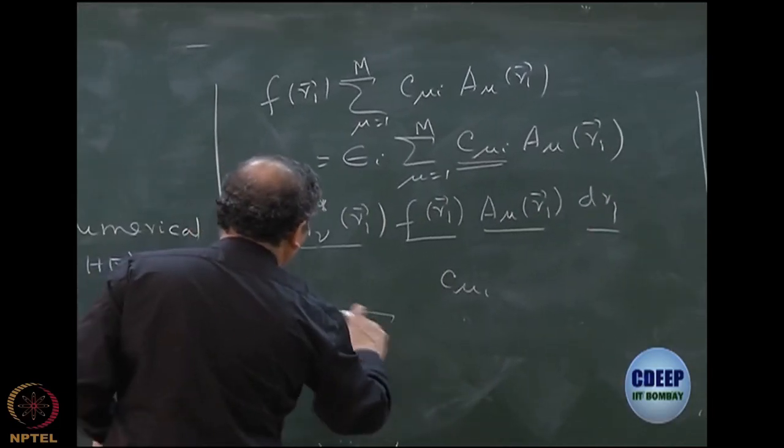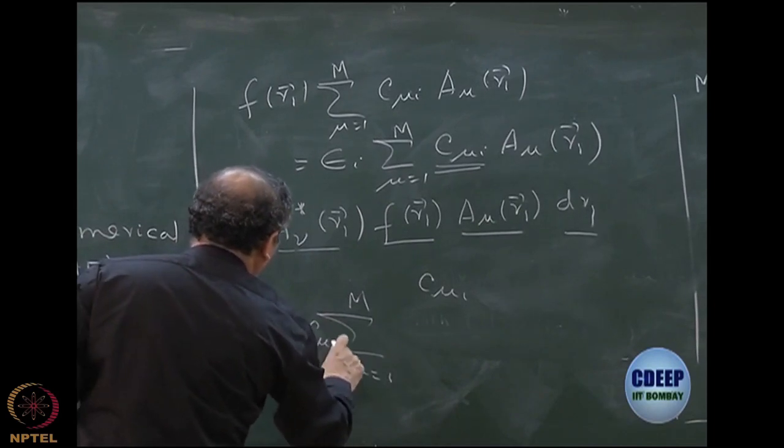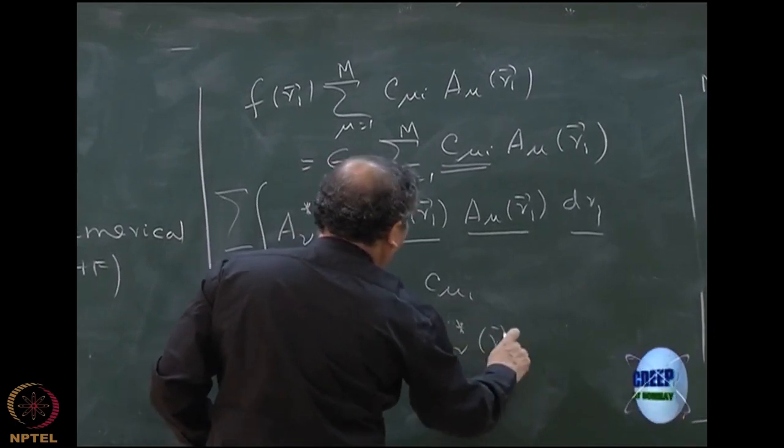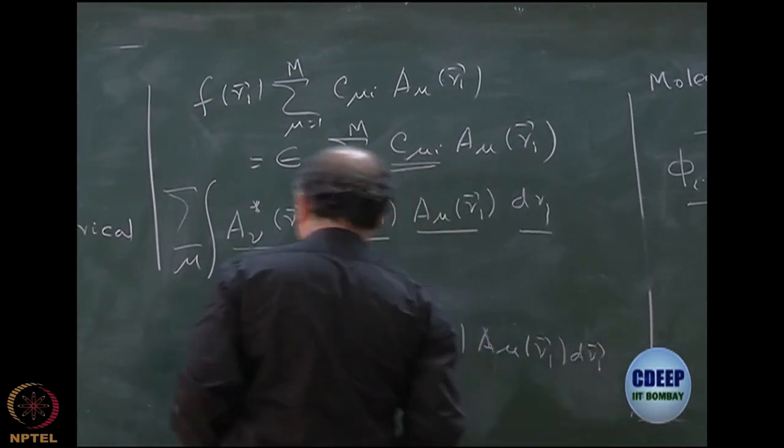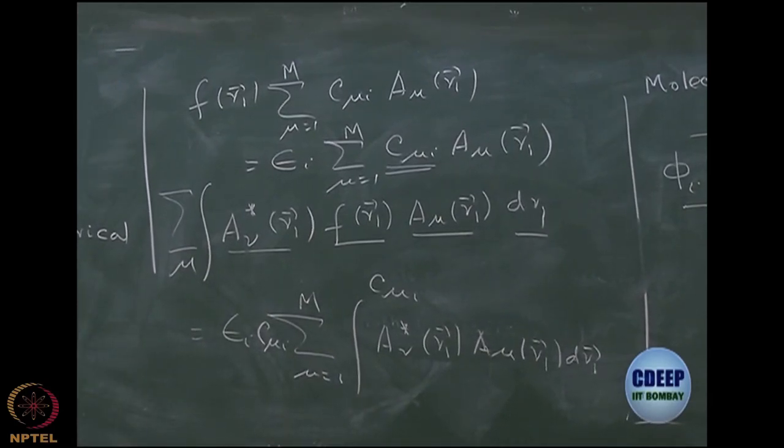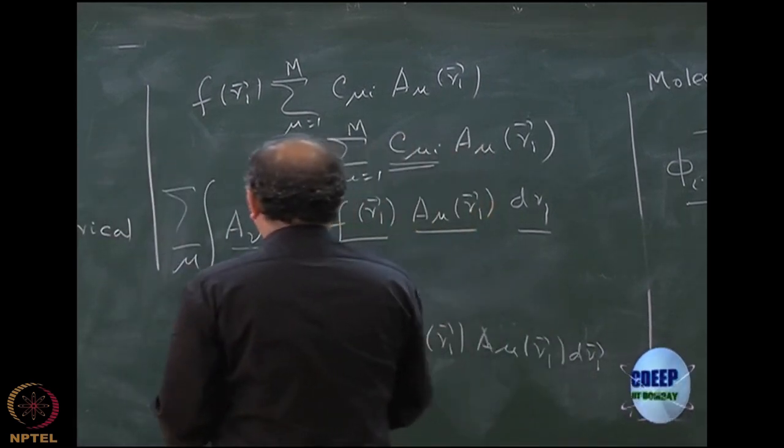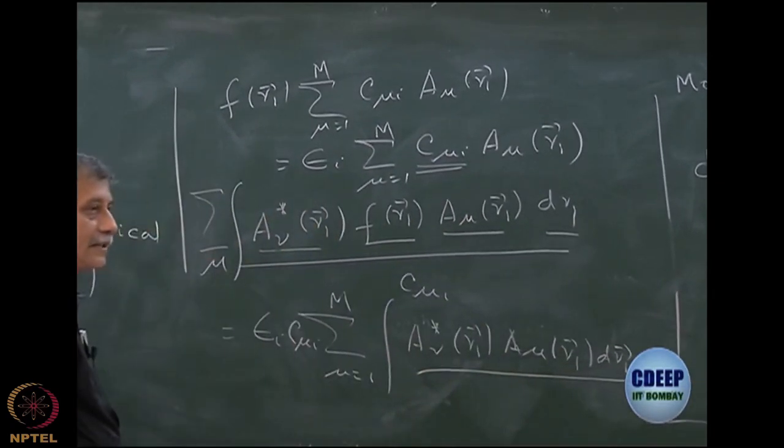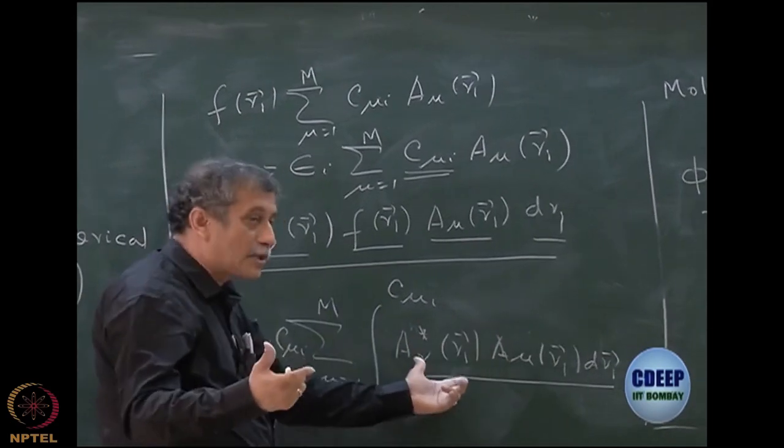Do the same thing on the right hand side, obviously. So epsilon I sum over mu equal to 1 to m, again C mu I can come outside and then you have an integral A nu star R1, A mu R1, dR1. That becomes my equation, right?